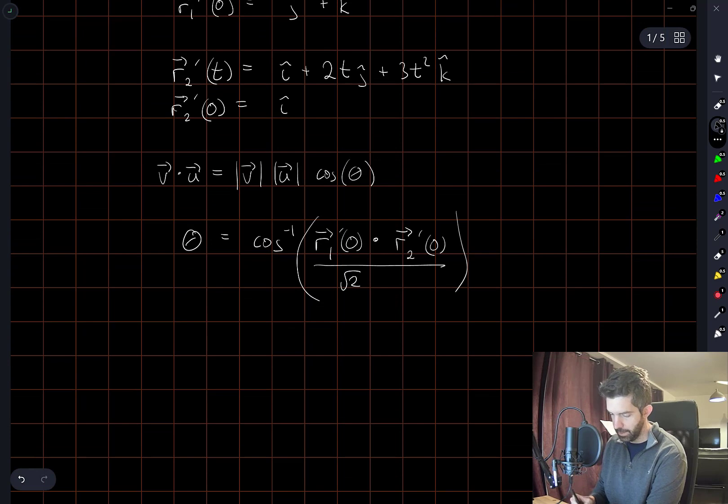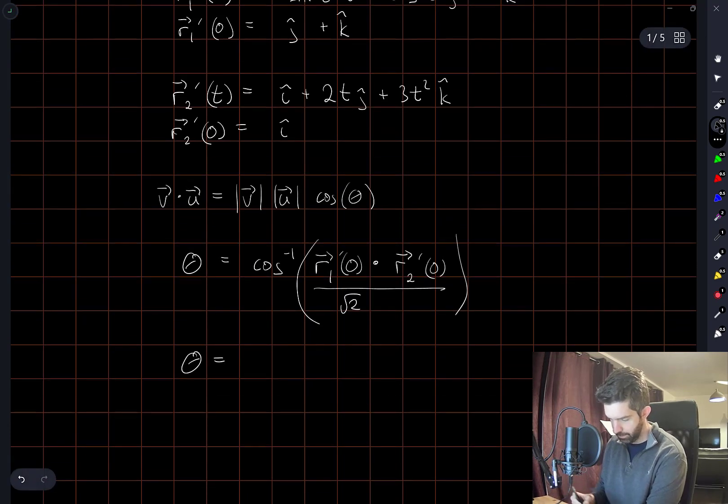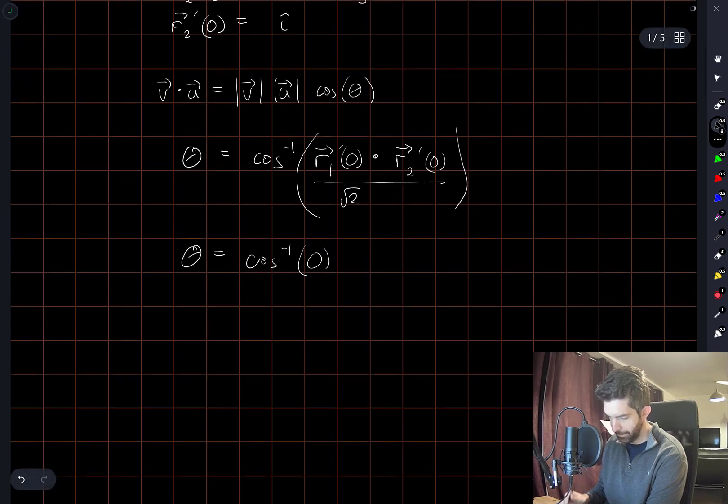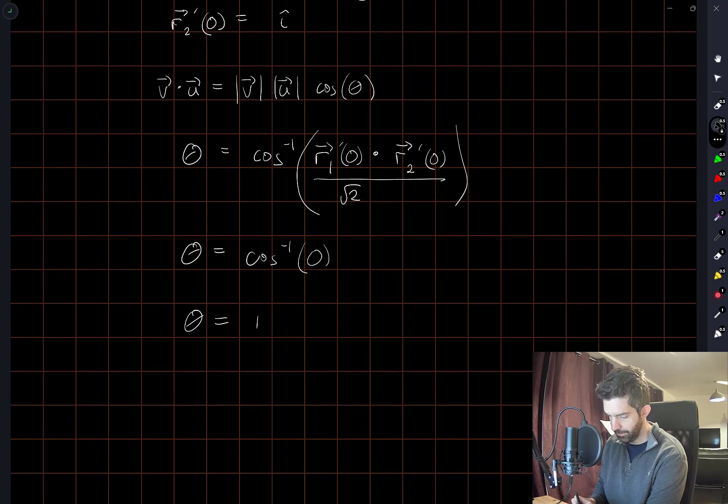But the dot product here is equal to 0. And so theta is equal to pi over 2, or 90 degrees.